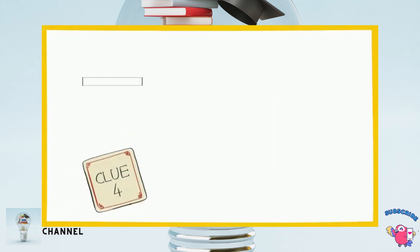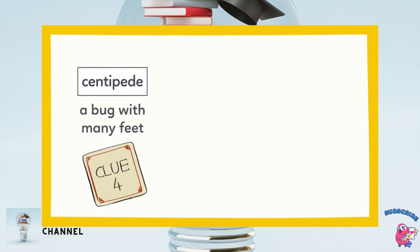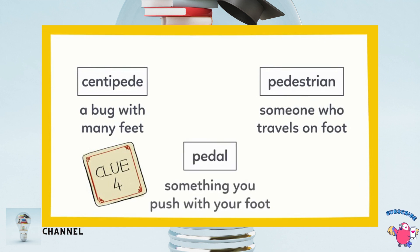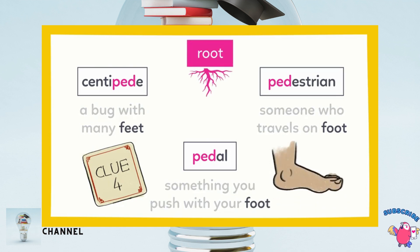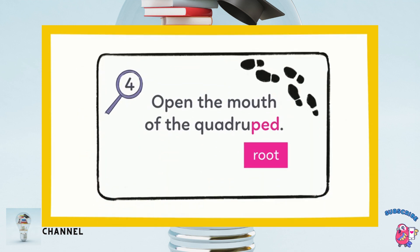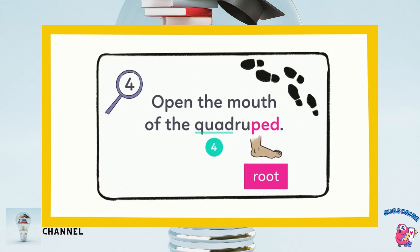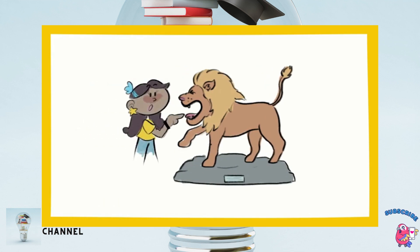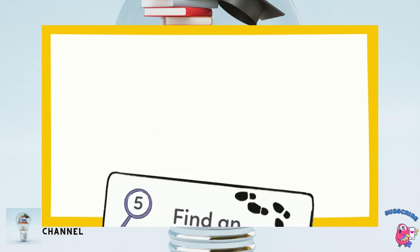This clue says: open the mouth of the quadruped. On the other side it says: centipede — a bug with many feet; pedestrian — someone who travels on foot; pedal — something you push with your foot. The root ped means foot. So now we understand our clue: a quadruped has four feet — quad means four. Over there, the lion is a quadruped! I'll reach inside its mouth. Here's the next clue!